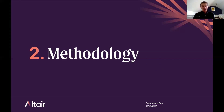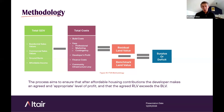The methodology at a high level compares the income achievable from the proposed development against what it would cost to deliver it. When costs are deducted from that income, the residual land value is derived — effectively the amount of money a developer could pay to purchase a parcel of land. The residual land value is then compared to a benchmark land value, which is the assumed value of the site the landowner would seek to achieve based on its current use or another planning-compliant use. In simple terms, the residual land value must meet or exceed the expectations of the landowner, i.e. the benchmark land value, otherwise the developer would not be able to purchase the land and therefore not be able to deliver the project.